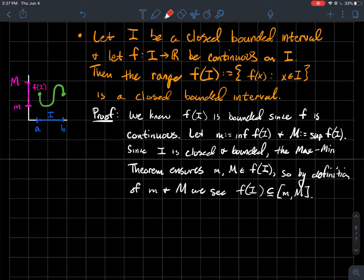Therefore, little m is smaller than every point in the range, whereas capital M is larger than every point in the range. So we have that the range should be contained in the interval from little m to capital M. To finish the proof, I'm going to show you that the reverse inclusion holds as well, to conclude that these two sets are equal.